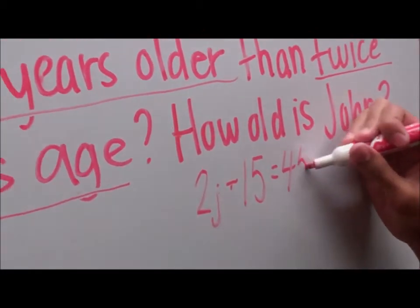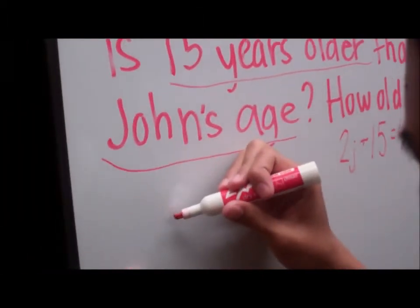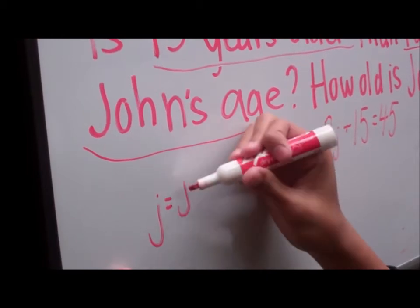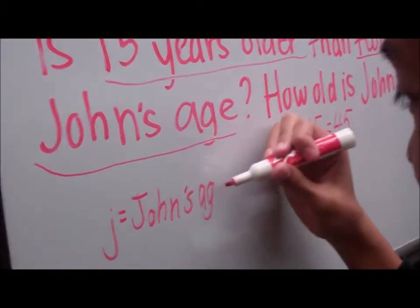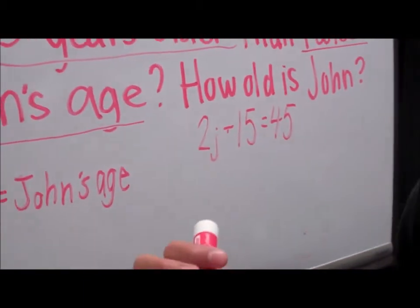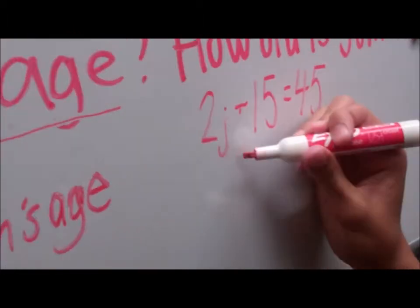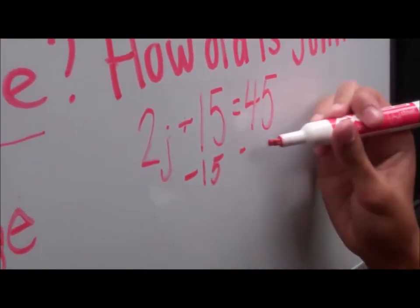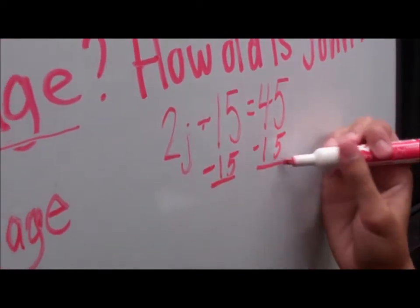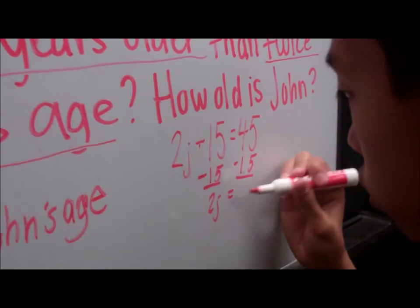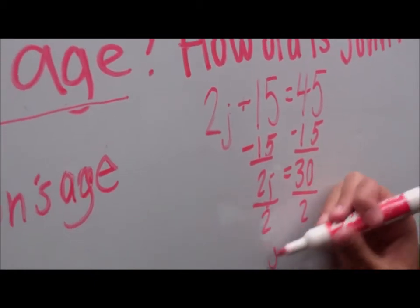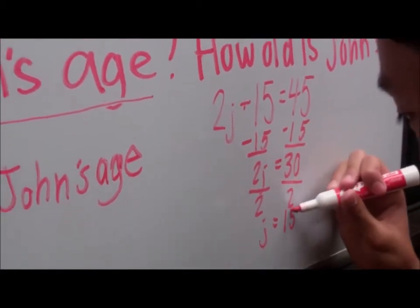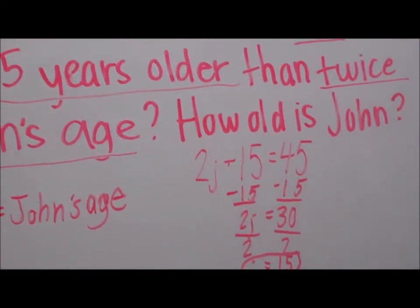So what he's writing is 2j plus 15 equals 45, and the j is the variable and it stands for John's age. Now Sean is going to continue solving the problem. So he's going to subtract 15 from both sides. And he's going to bring down 2j and 30. And then he's going to divide by 2 and j equals 15. And we got the answer. And that's how you solve a word problem.